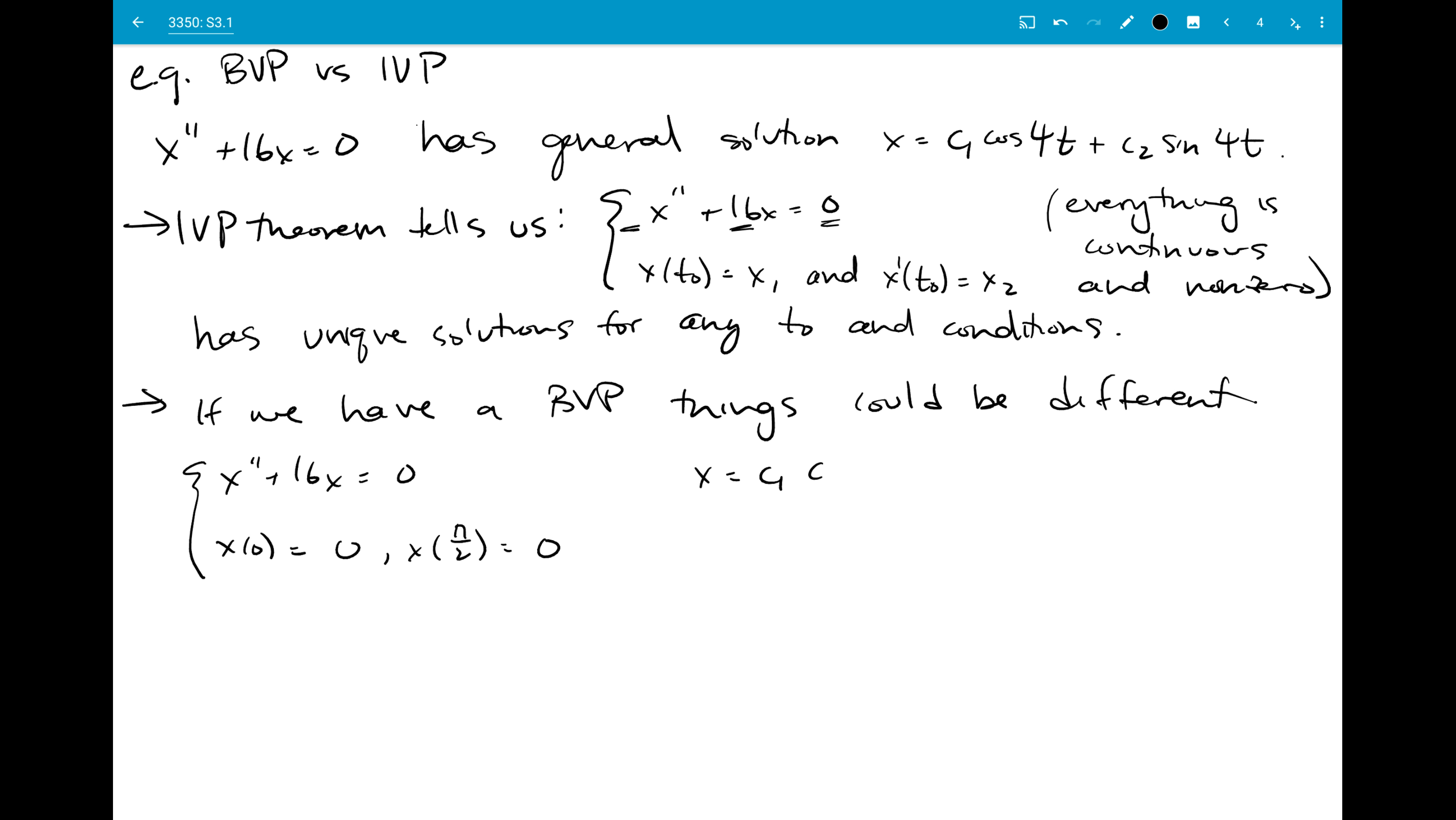So if I have x equals c1 cosine 4t plus c2 sine 4t, I just plug in when t equals 0, I need x equal to 0, and when t equals pi over 2, I need x equals 0. So I should have 0 equals c1 cosine of 0 plus c2 sine of 0 when I plug in 0, and 0 equals c1 cosine of 4 times pi over 2, which is just going to be 2 pi, plus c2 sine of 2 pi.